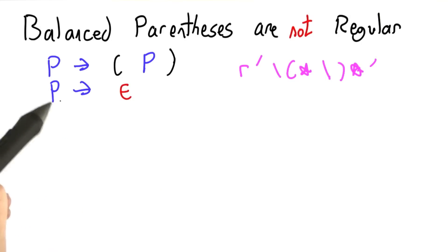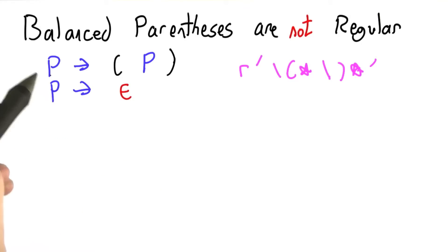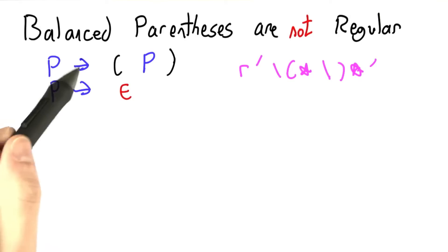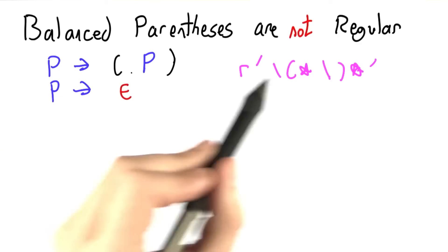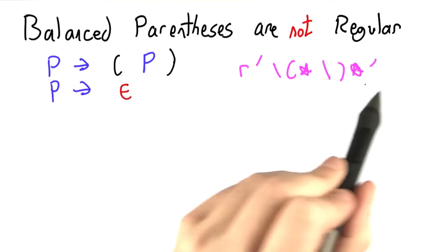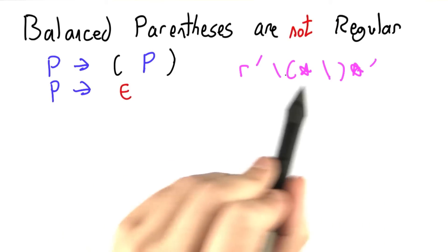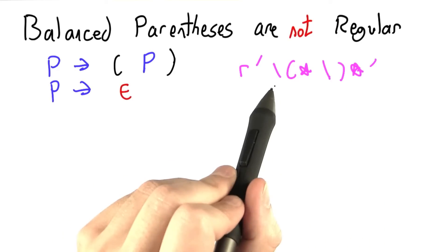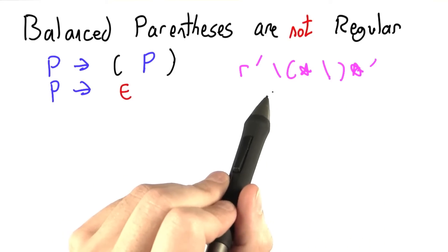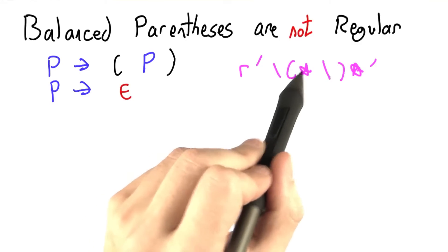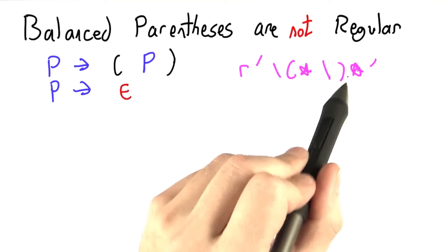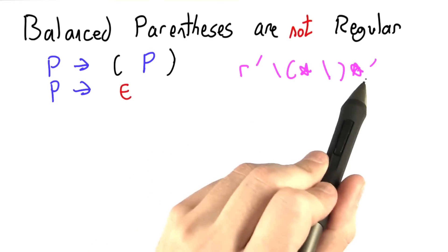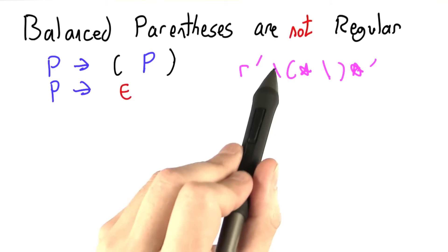Here I've written a grammar for balanced parentheses, and over here to the right I've tried to write a regular expression that catches the same sort of thing: an open parentheses possibly repeated, and a closed parentheses possibly repeated.